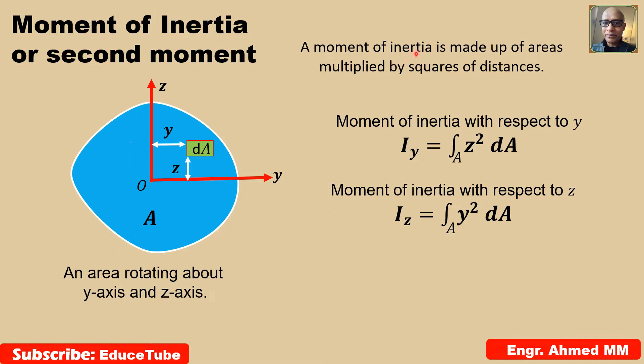If we look at this, what we can see? z squared, y squared. It is nothing but squares of distances. And the distances are here, z and y, multiplied by differential area. That's what it says, area multiplied by squares of distances.